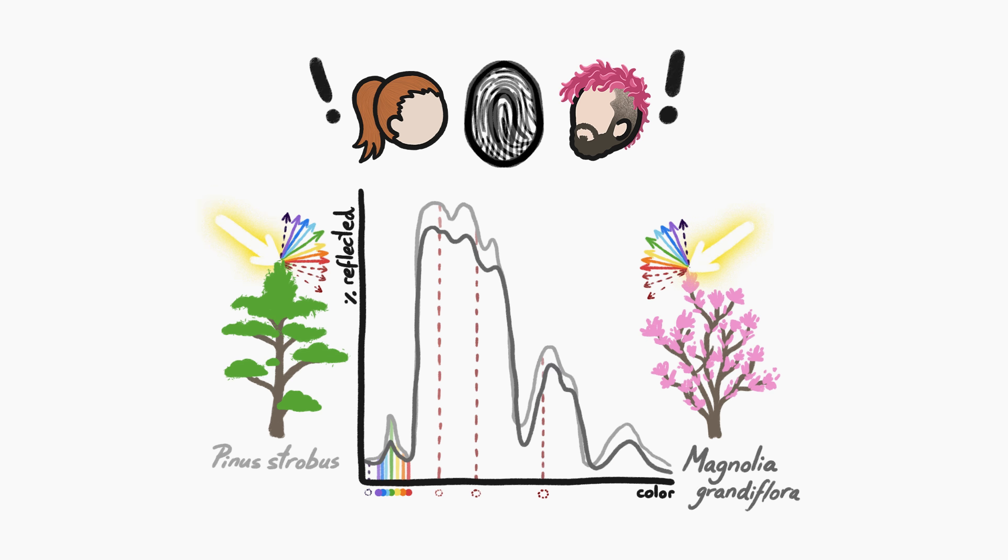But, like the tiny differences in those fingerprints' swirls and whirls, there are tiny differences in how the two tree species reflect light, thanks to their slightly different chemical composition, crown and microscopic structure, water content, and more.